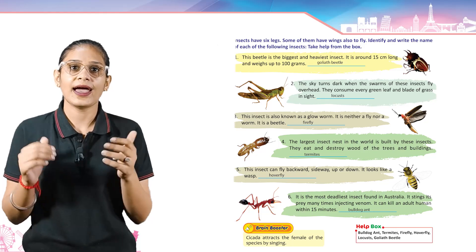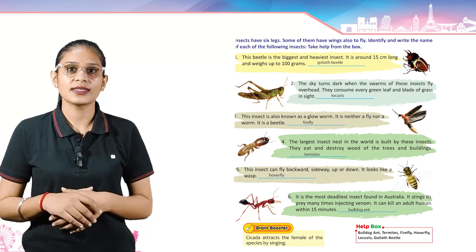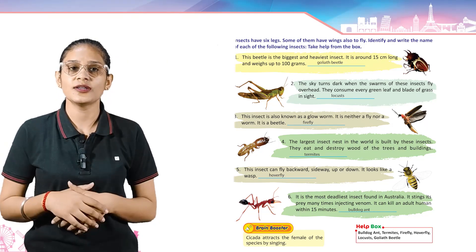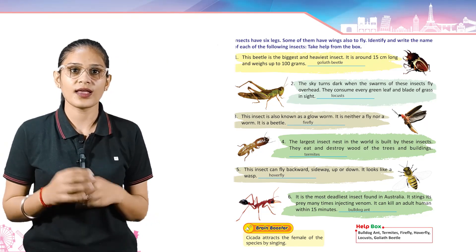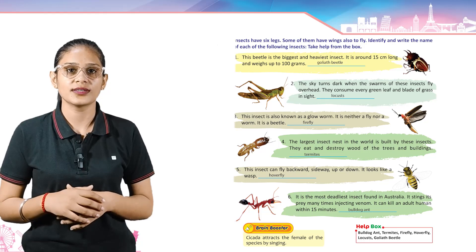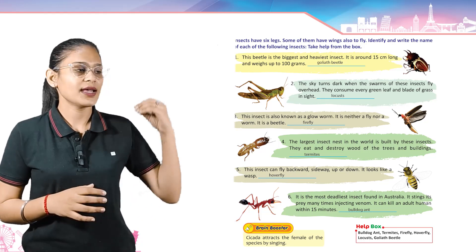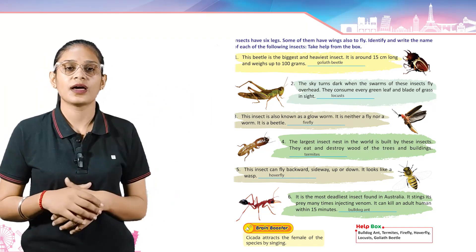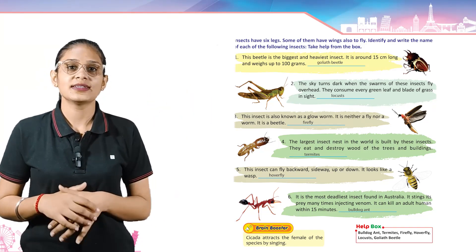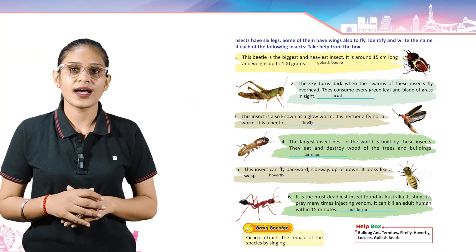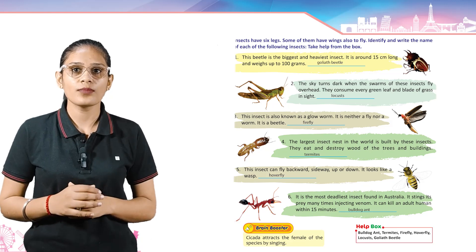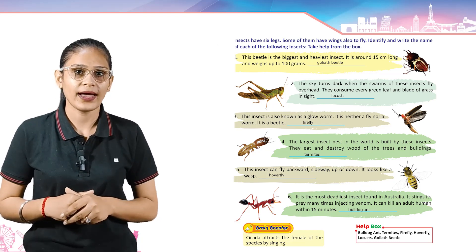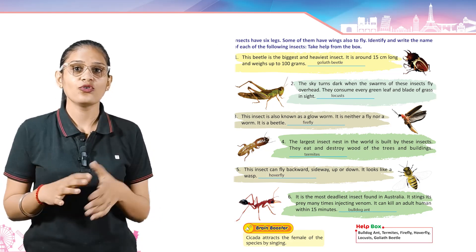This beetle is the biggest and heaviest insect. It is around 15 centimeters long and weighs up to 100 grams. Its answer is the Goliath Beetle.